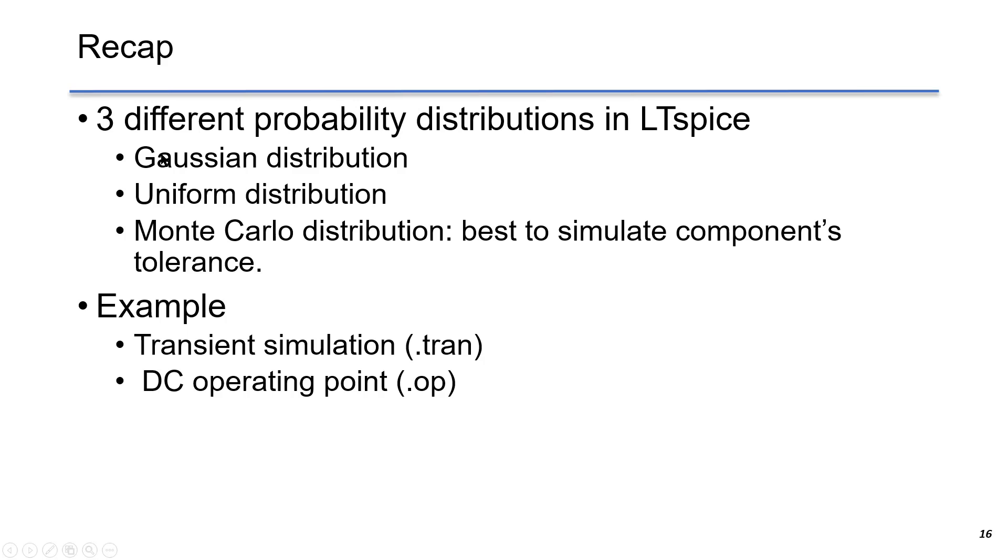Just to recap, in this lecture, we discussed three different probability distributions in LTSPICE, including Gaussian distribution, also known as the normal distribution, uniform distribution, and the last one is Monte Carlo distribution, which is the best method to simulate component's tolerance.